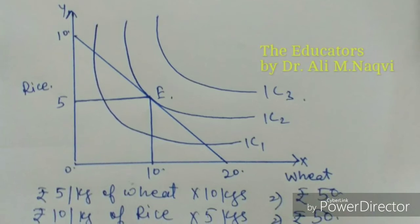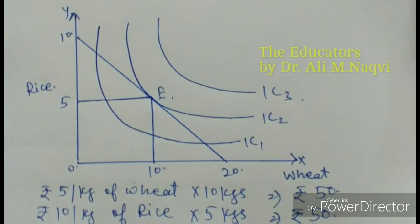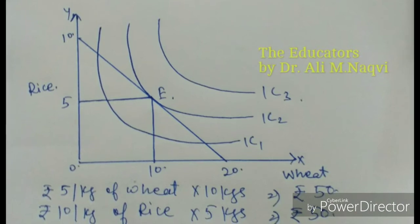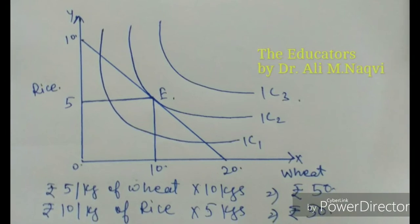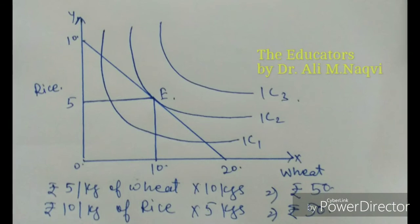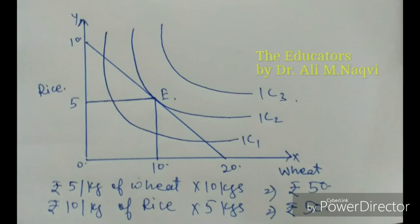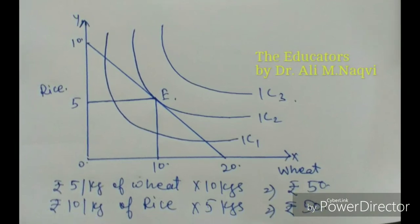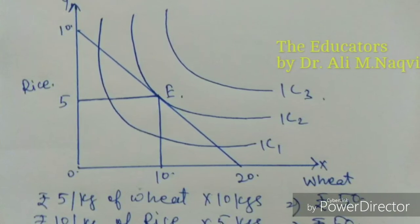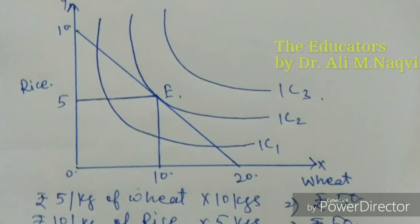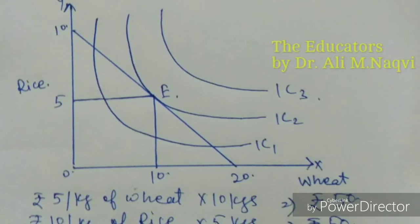The consumer is rational and wants maximum happiness and utility. There are three options A, B, and C. Point A is within the budget — he can do better, so he will never make purchases at A because he has remaining resources to do more. The second assumption of indifference analysis is that the consumer prefers more of a commodity, so he will move from A to B. He could move towards C, but because of the budget constraint he cannot purchase at point C. So the consumer will settle at point B.